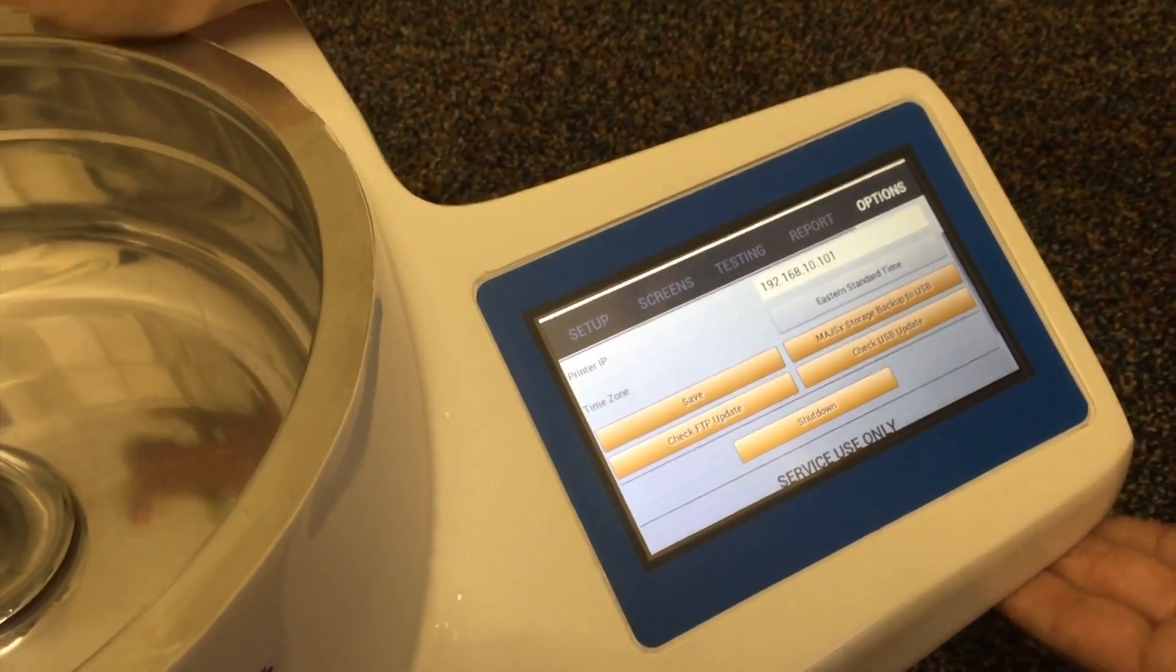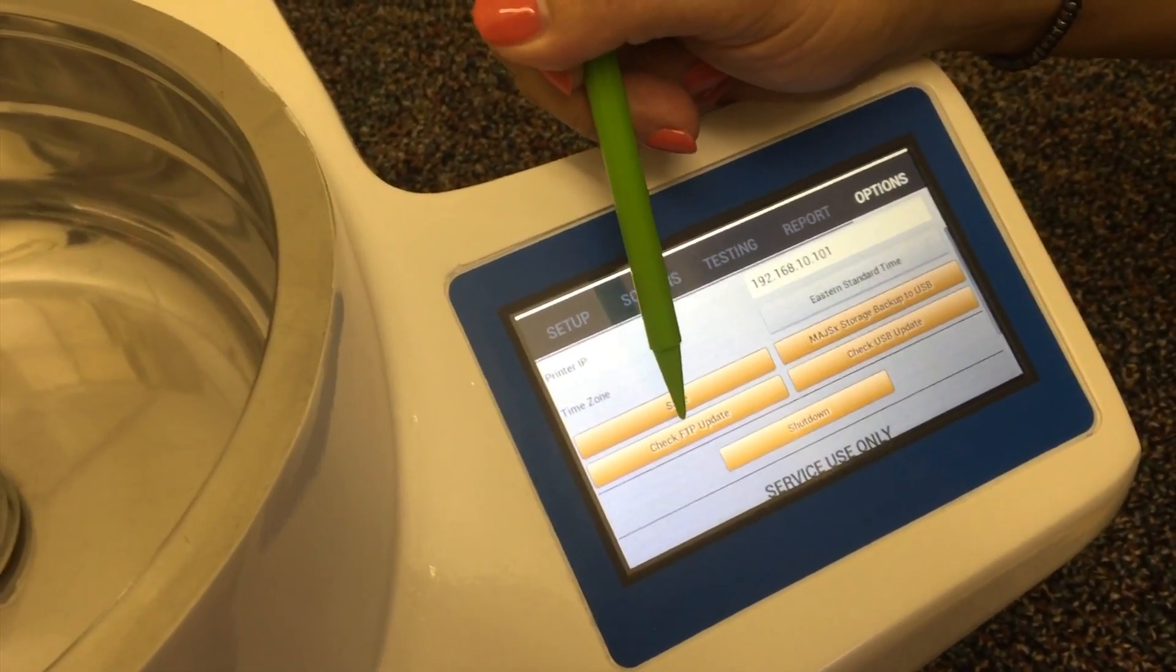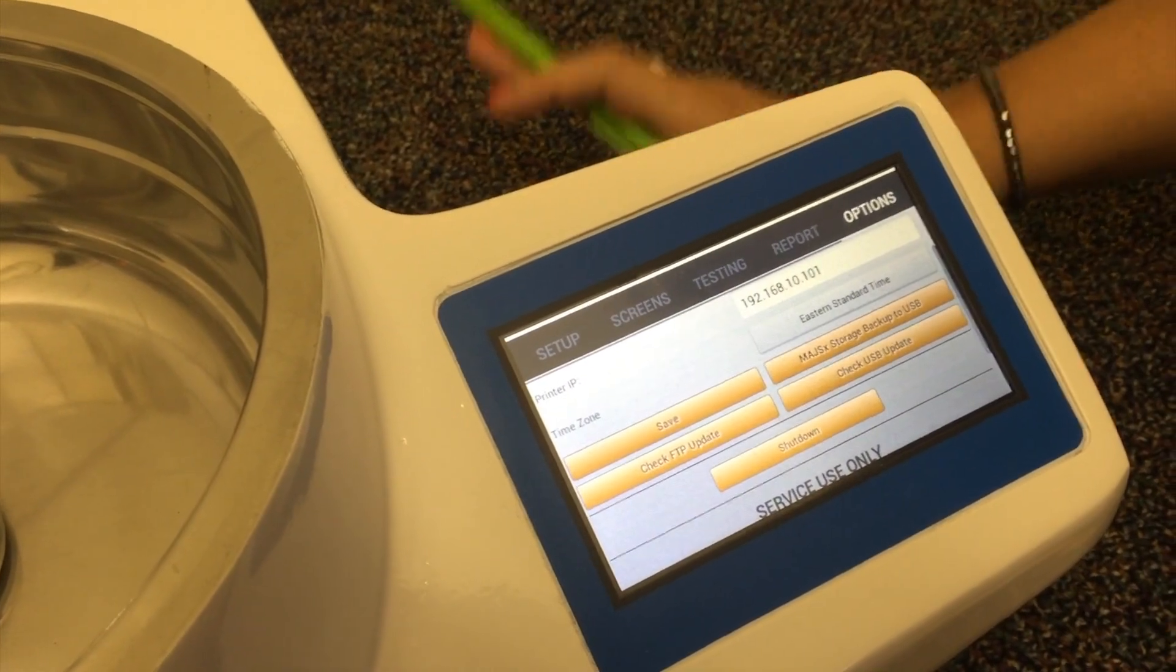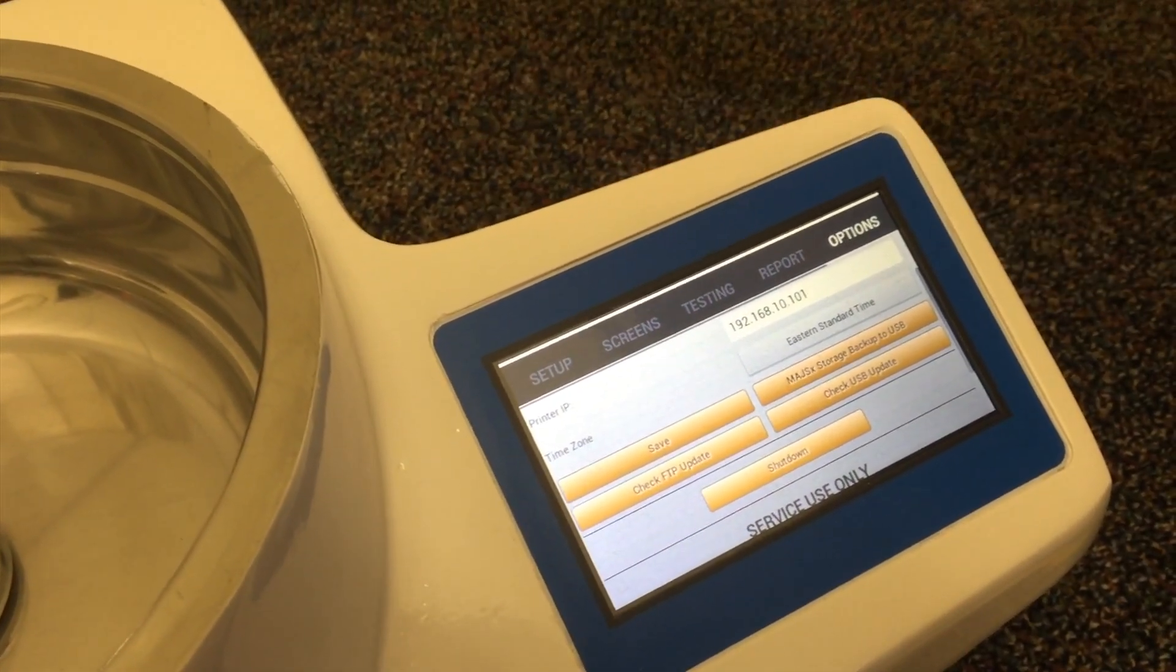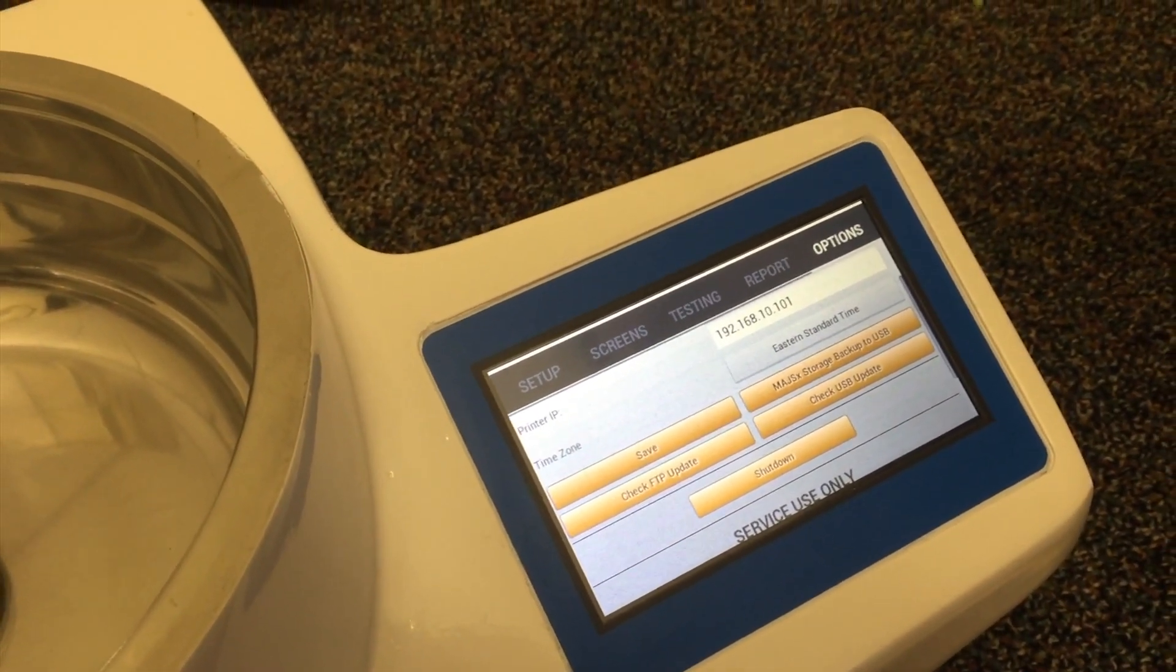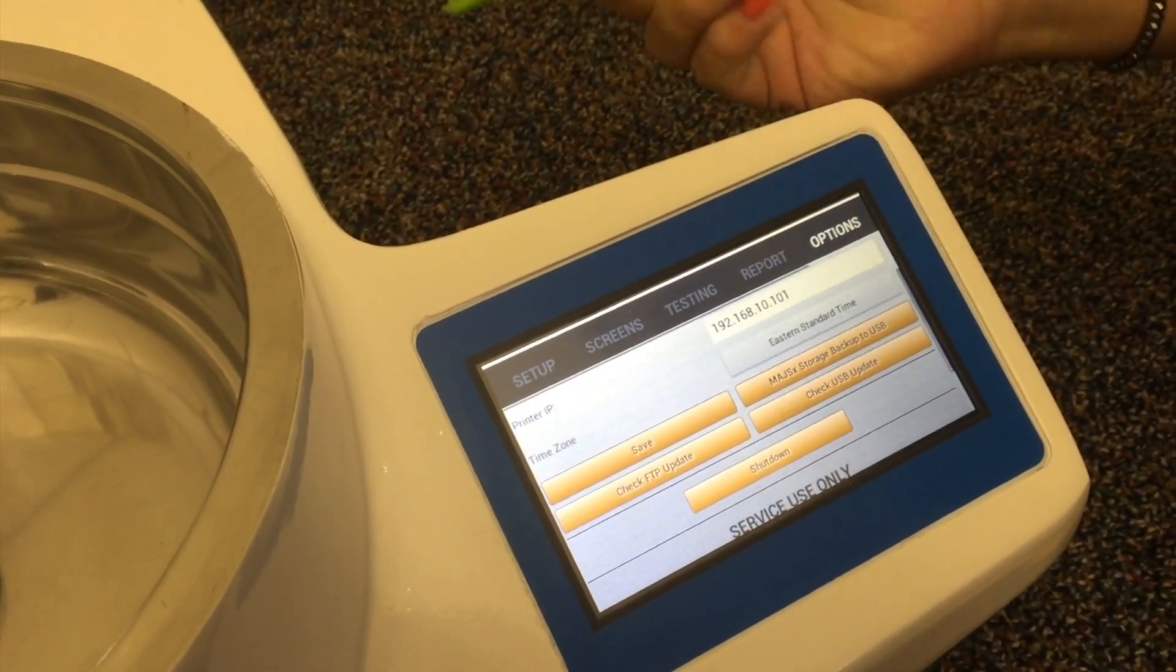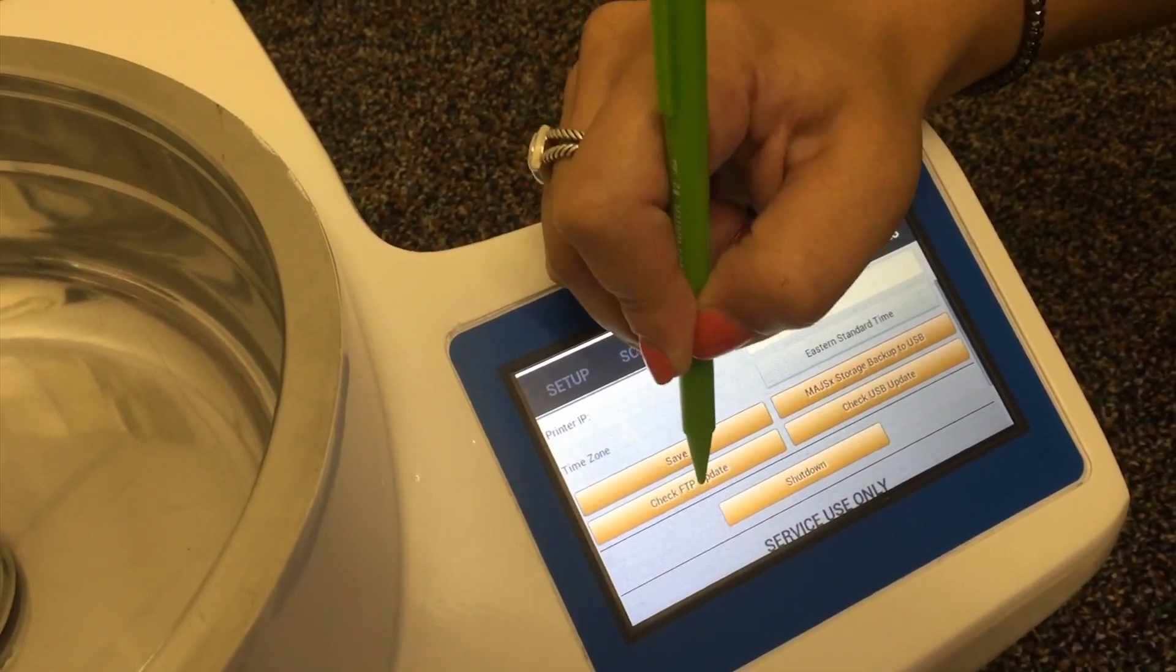This unit is set up and we are connected to an internet access network so we're going to be using the check FTP update. Should you be in the basic mode, most likely you're going to be connected to a mini LAN connection or a router, so you would be using the check USB update. So now we're going to select the check FTP update.